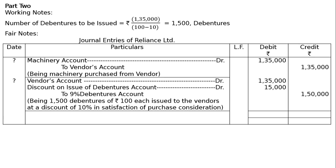The debit and credit amount columns will be totaled, giving Rs. 2,85,000 in the debit column as well as in the credit column. This is the final answer.